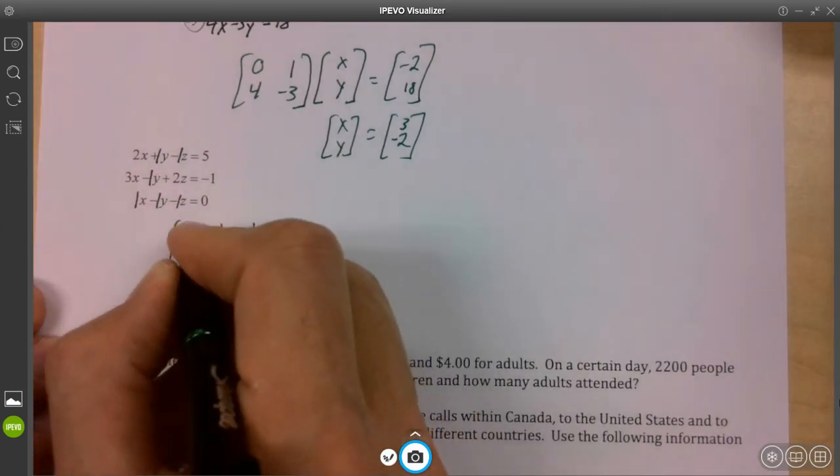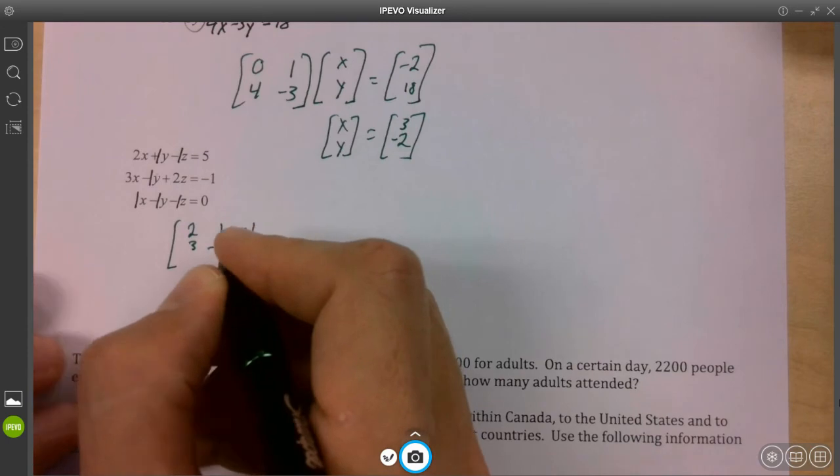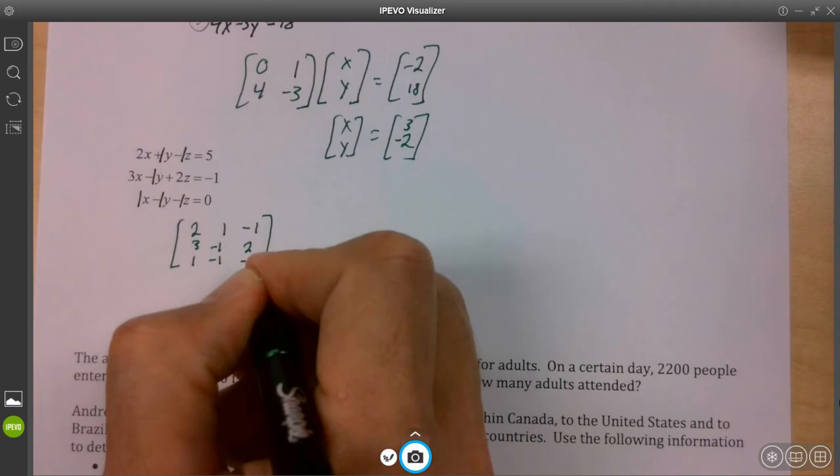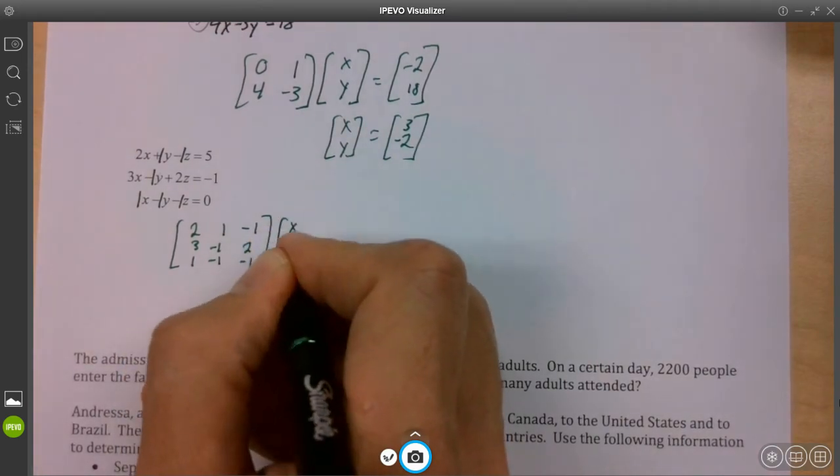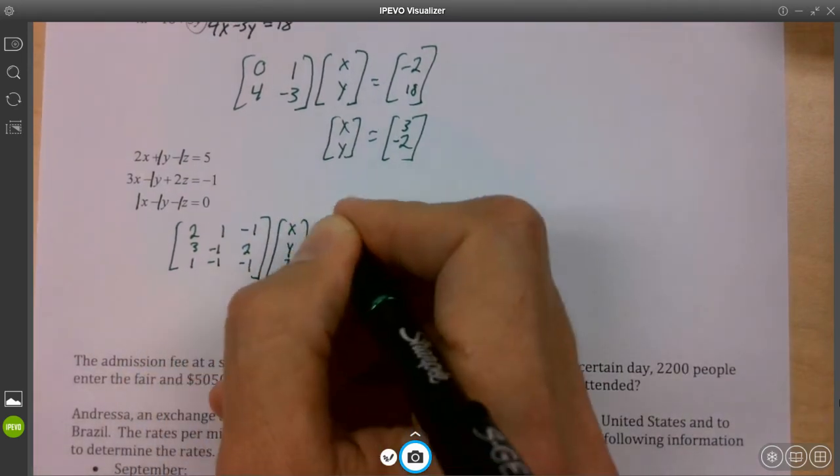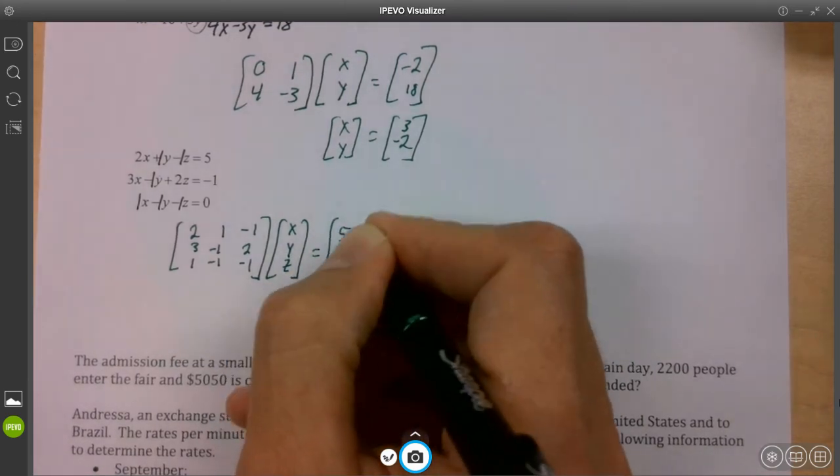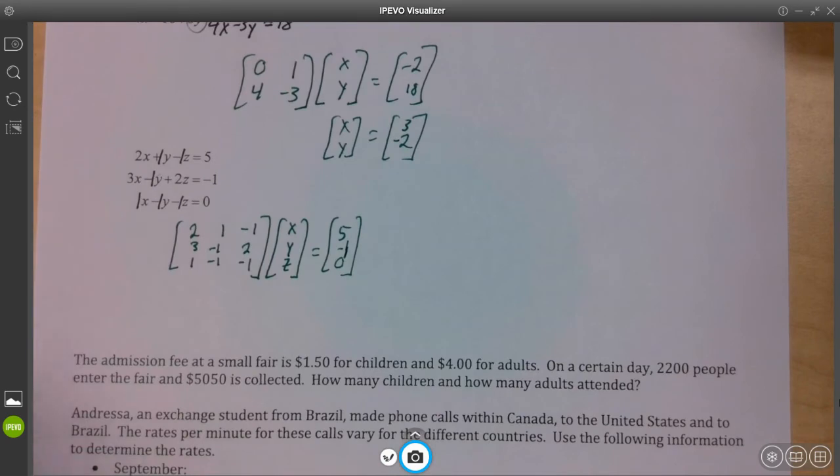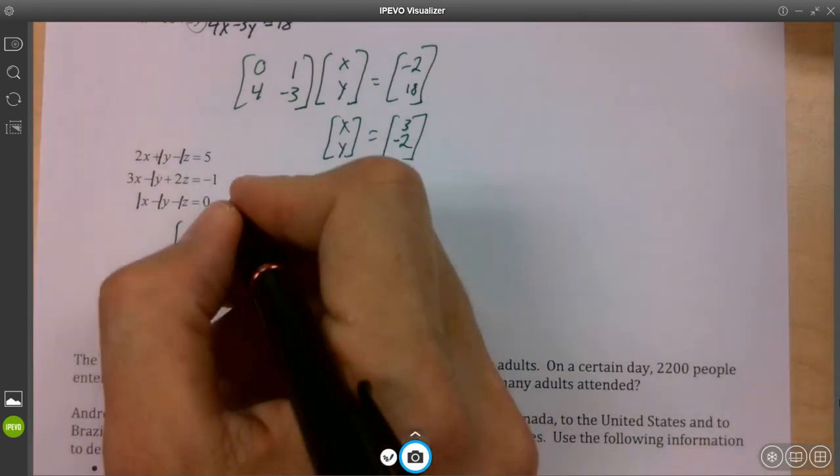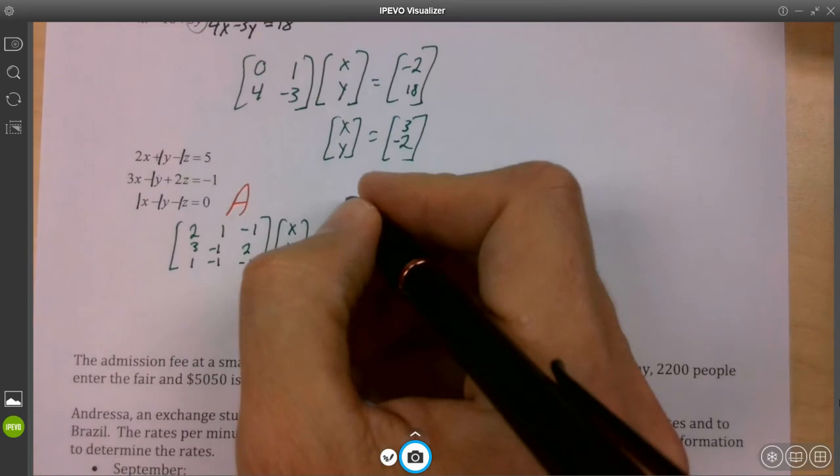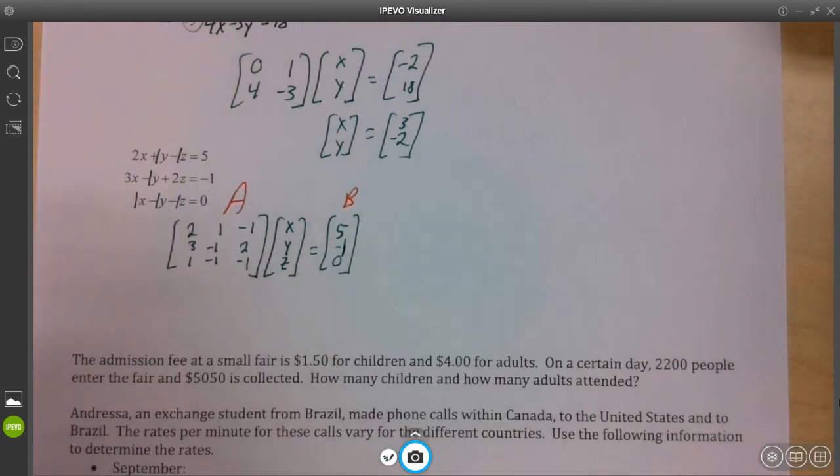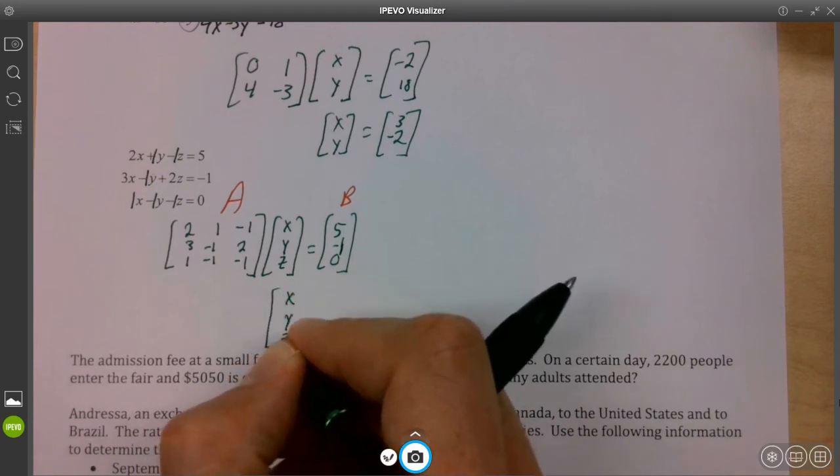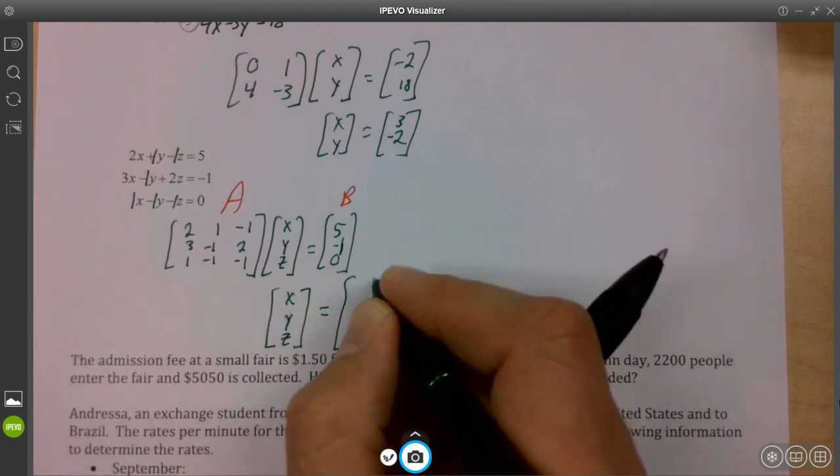So let's go. X, Y, Z equals number. X, Y, Z equals number. X, Y, Z equals number. It's fine. We just have an extra variable in there. So here we go. Two, one, negative one, three, negative one, two. And then one, negative one, negative one. And so we have X, Y, Z equals five, negative one, zero. And same thing, only now A is bigger. A is a three by three matrix. B is a three by one matrix. And my final answer isn't X and Y. It's X and Y and Z. It's all three of those.